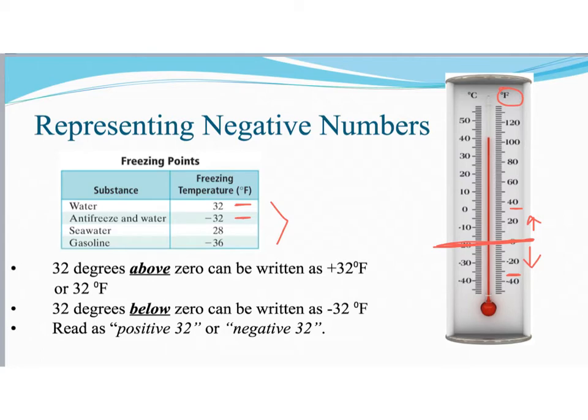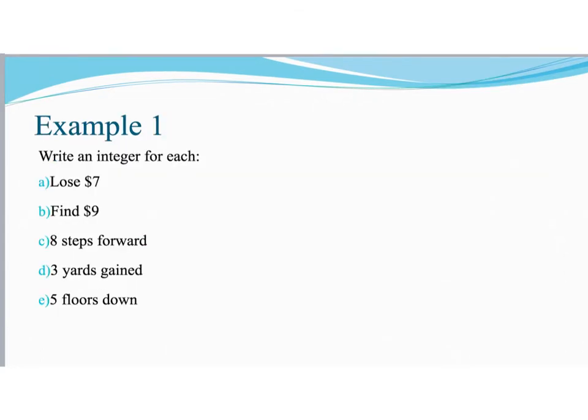So let's take a quick look at an example of how we would use negative numbers. So for example one, it says write an integer for each. Keep in mind that if you want to write something as a negative number, you have to remember to include the negative.